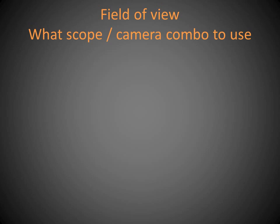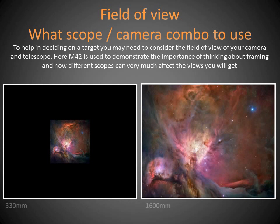Field of view — what scope and camera combination to use. Some targets are big, some are small. At 330mm with my one scope, you can see how large Orion would appear in my camera frame. If I used a scope at 1600mm, Orion would be totally frame-filling, and to capture the complete nebula I'd need mosaics. So you need to think about whether you're generally imaging big or small targets, then choose a camera and telescope combination accordingly.